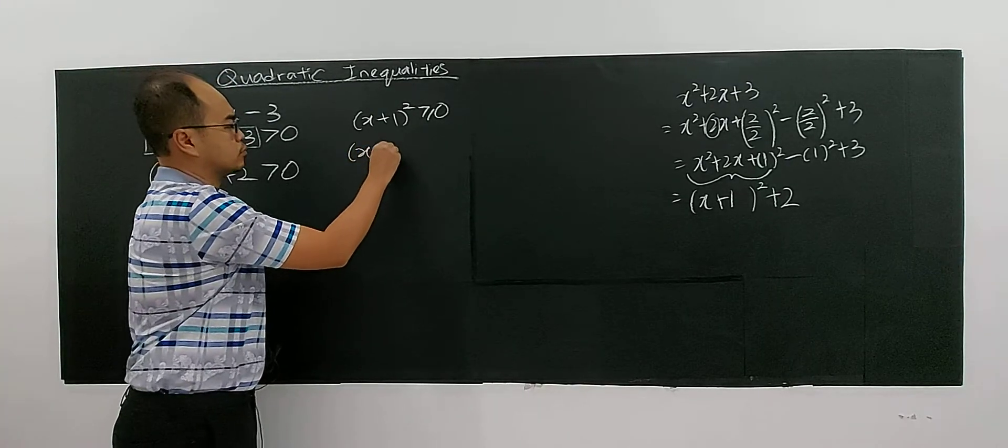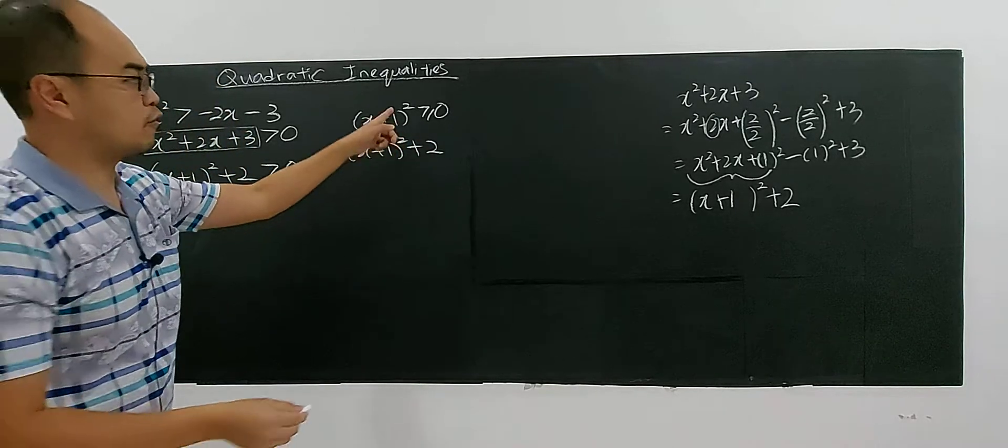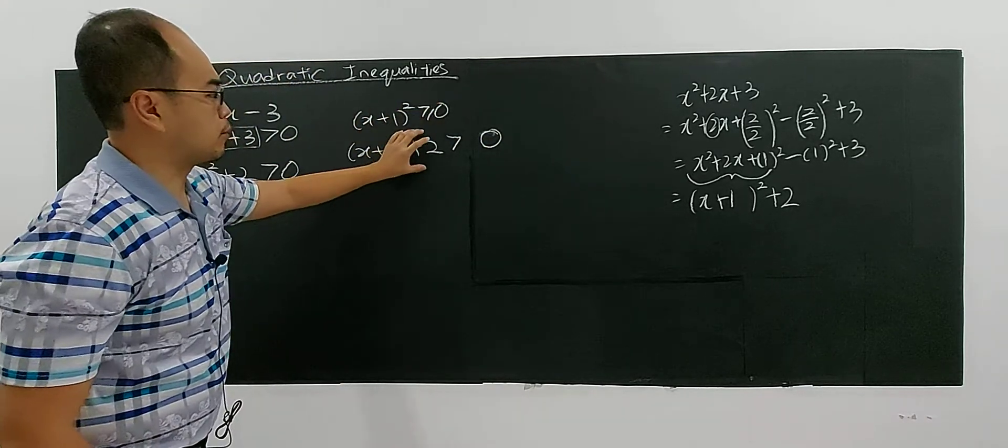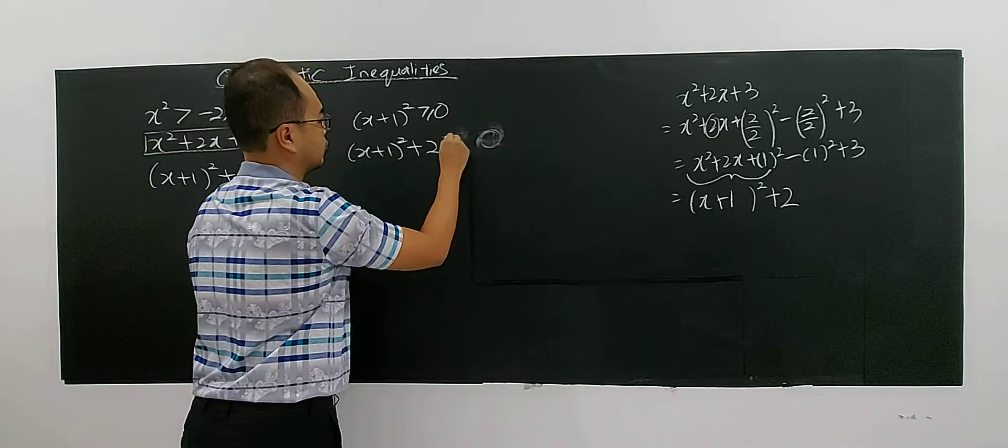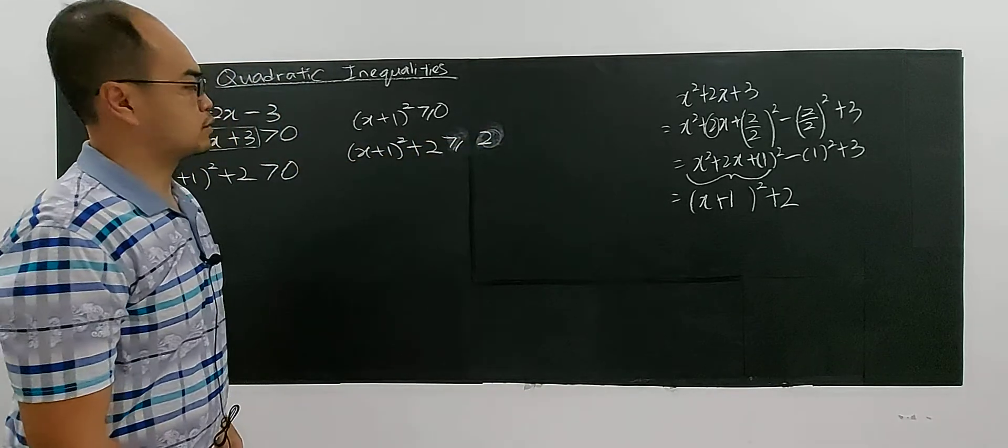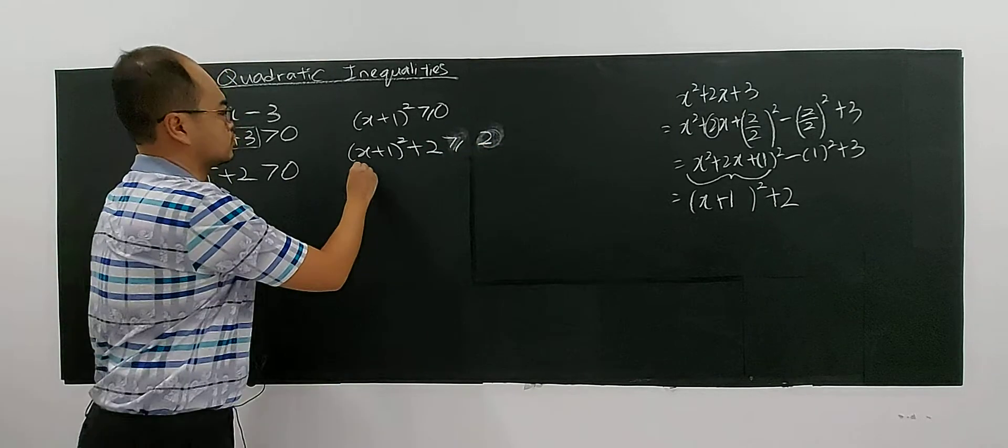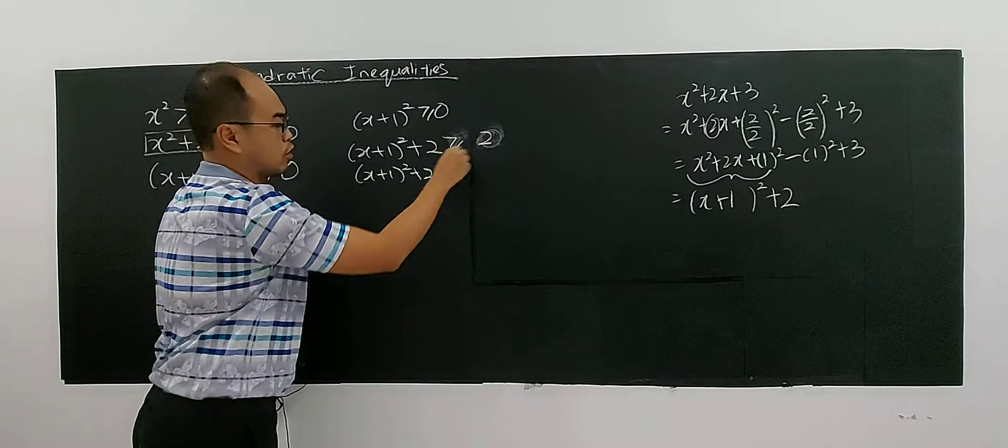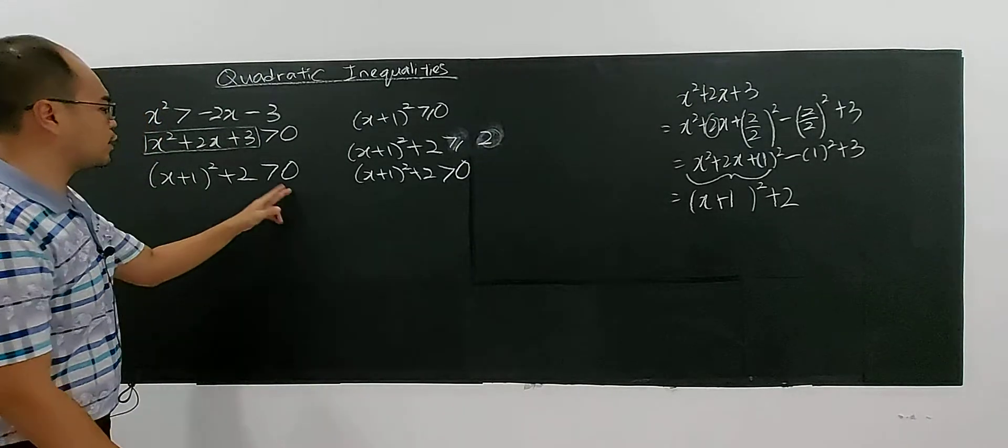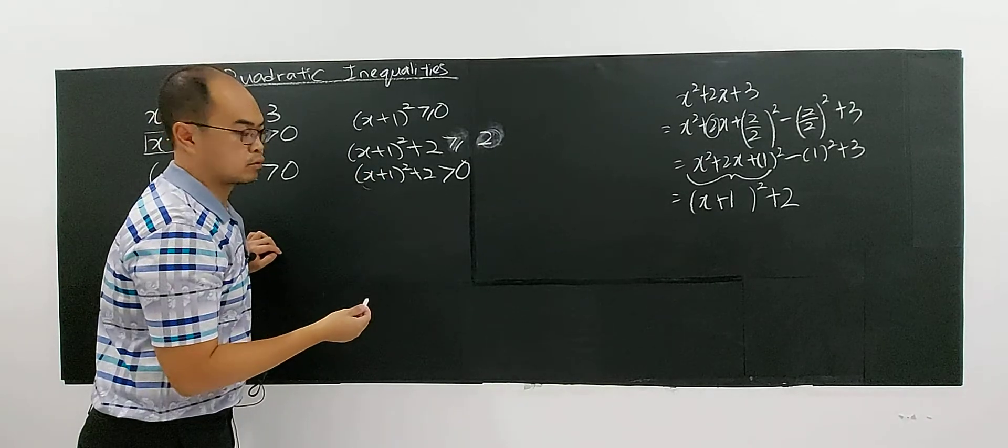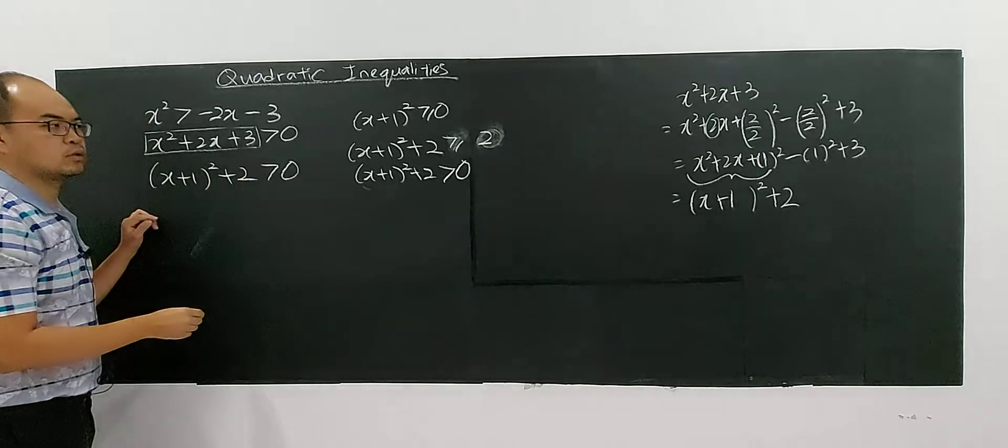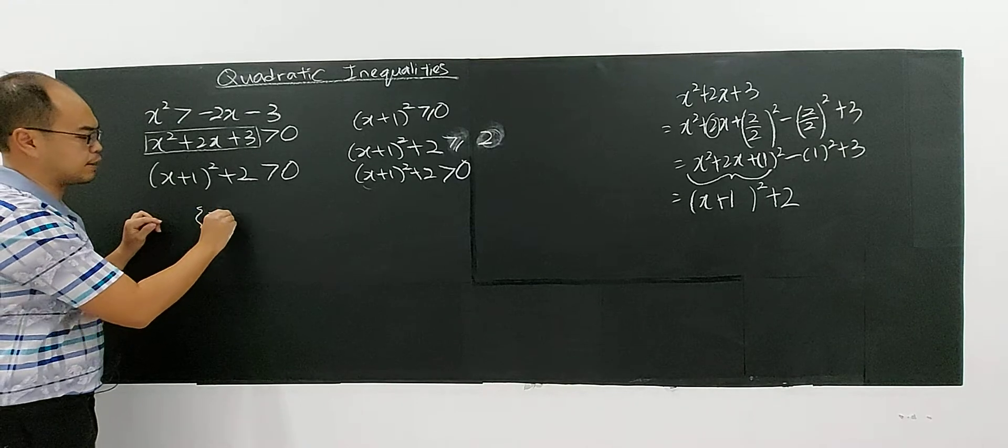So when you add this to a 2, when you add a 2, it of course become greater than 0. Why? Because this is at least 0. When you plus 2 both sides, (x + 1)² plus 2 is at least greater than 2. So means it is already greater than 2. Means that (x + 1)² definitely at least is 2. Of course, this whole thing will be greater than 0. It will be greater than 0. This is always greater than 0. No matter what value of x you choose. You put negative, you put negative 100, you put 0. Any number also, it will be greater than 0.